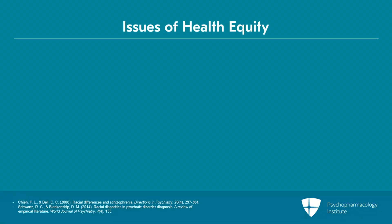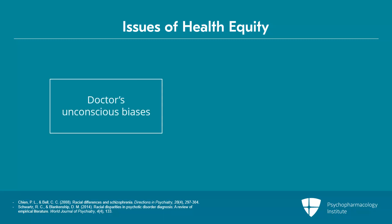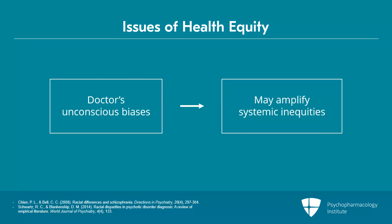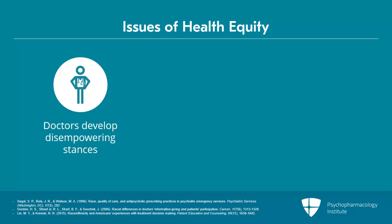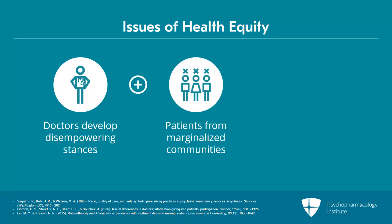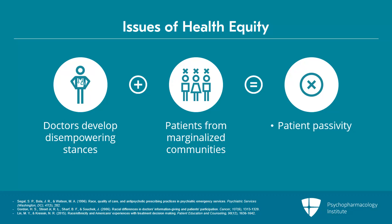As I've emphasized around countertransference, we're learning more and more the extent to which there are issues of health equity involved in all of this. As part of the recognition of the irrationality of the prescriber, it's also important to recognize how our own unconscious biases may perpetuate or amplify systemic inequities. We know that there are pressures towards misdiagnosis in our patients of color. Studies have shown there's an increased likelihood that we're going to develop disempowering stances with patients from marginalized communities. Statistically, they're more likely to prefer counseling, but we give them less information about treatment options and communicate in ways that perpetuate patient passivity. We're also more likely to prescribe oppressively — for example, those patients are much more likely to end up on higher doses of antipsychotics than patients from dominant social groups.